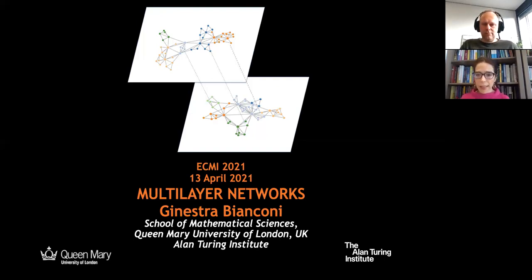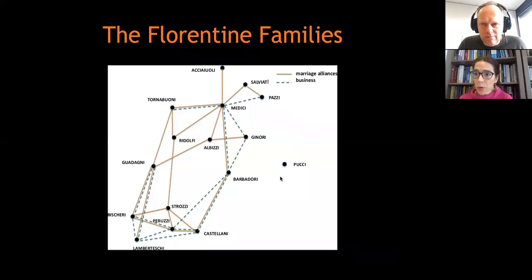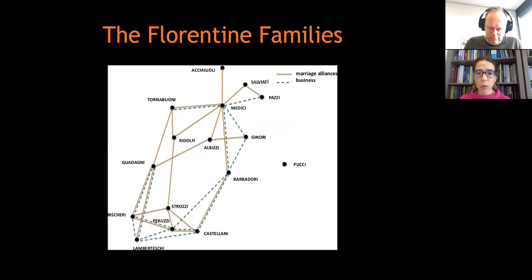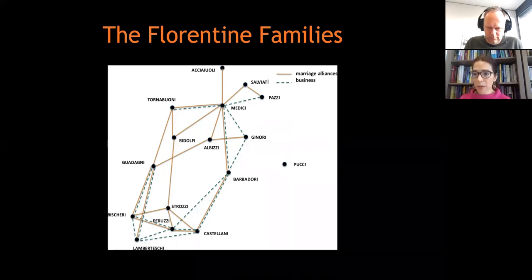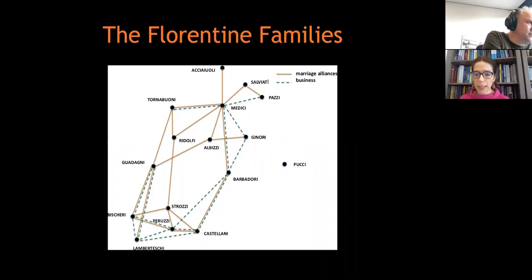The first kind of models that have been studied, like by sociology, was this social network of Florentine families in the Renaissance period, where the network of power was established via marriage alliance or business relation. One important question here was centrality — characterizing what is the special role of the Medici family that was ruling the city at that time.